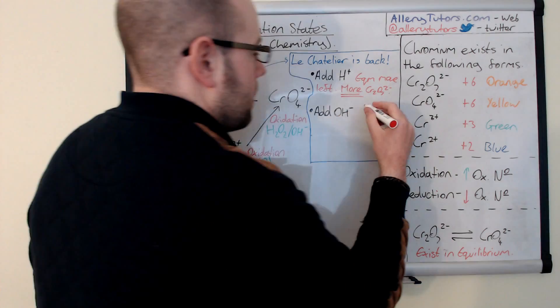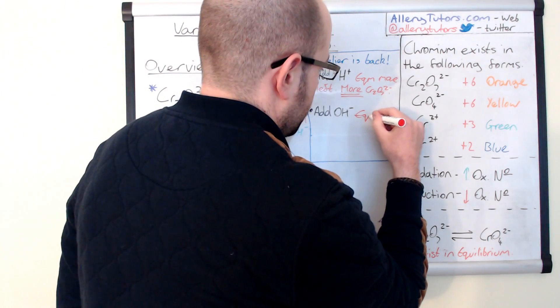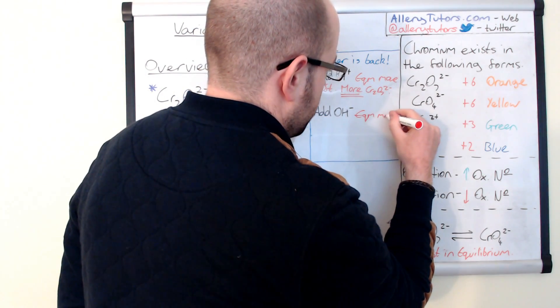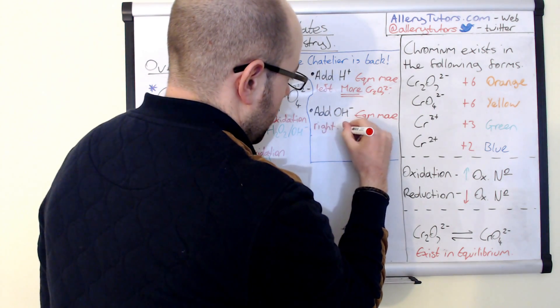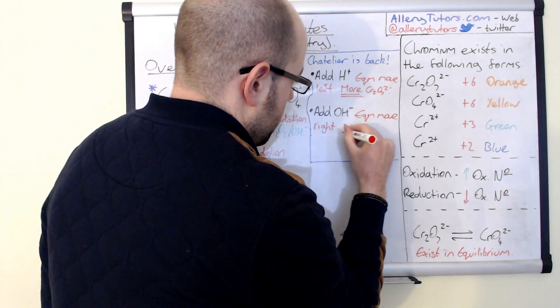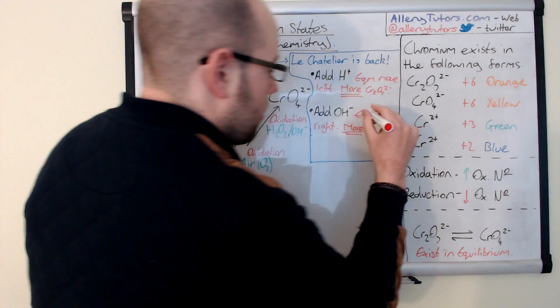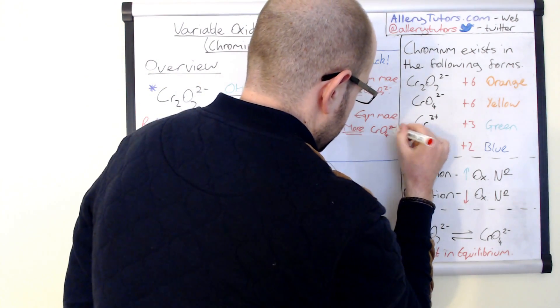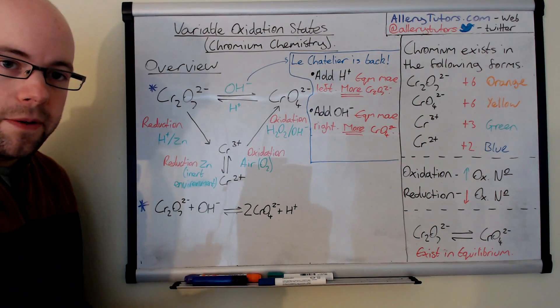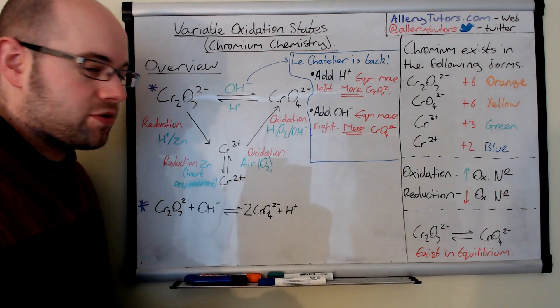So our solution should start to yellow when we add hydroxide ions. So again, we've got equilibrium will move to the right, and effectively, what we get is we get more chromate ion, which is CrO₄²⁻, and so the solution should go yellow. You can see this exists quite naturally in equilibrium.